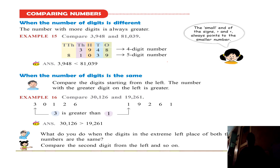Now, the second method: when the number of digits is the same. Look at the example: compare 30,126 and 19,216. Both numbers have 5 digits. When the digits count is the same, we start comparing from the left side of each number. We have 3 in the first number and 1 in the second number. When you compare 3 and 1, 3 is greater than 1. That means 30,126 is greater than 19,216.